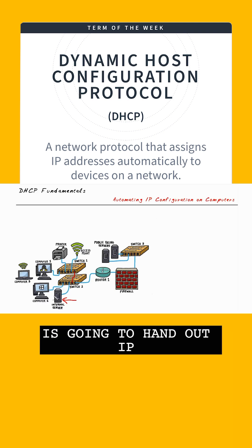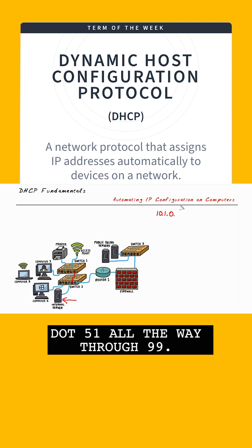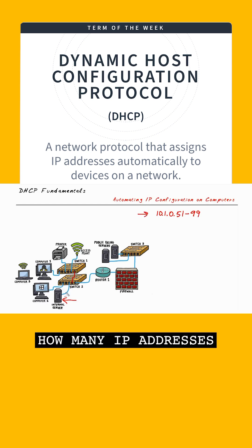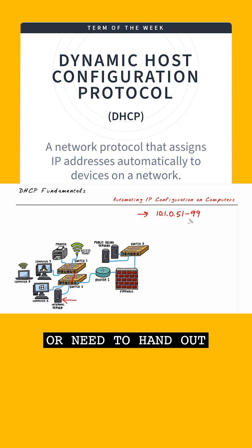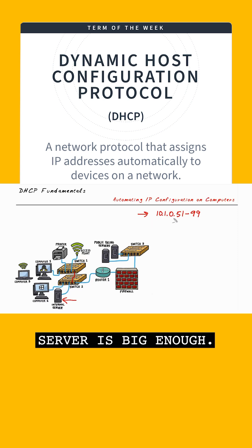Let's say that the server is going to hand out IP addresses on the network 10.1.0, handing out .51 all the way through .99. That would be part of our planning to identify how many IP addresses we intend to hand out, and make sure our pool of IP addresses on the DHCP server is big enough.